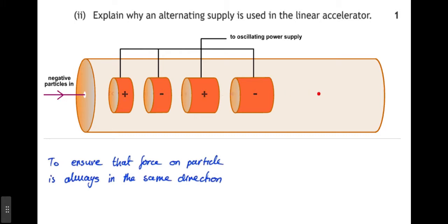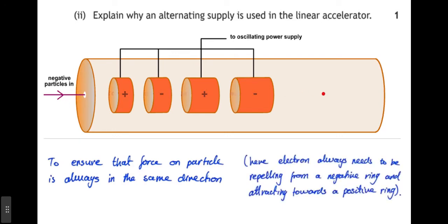So, the alternating supply ensures that the force on the particle is always in the same direction. If they weren't alternating, then the electron would just move back and forward between two rings. Here, electron always needs to be repelled from a negative ring and attracted towards a positive ring.